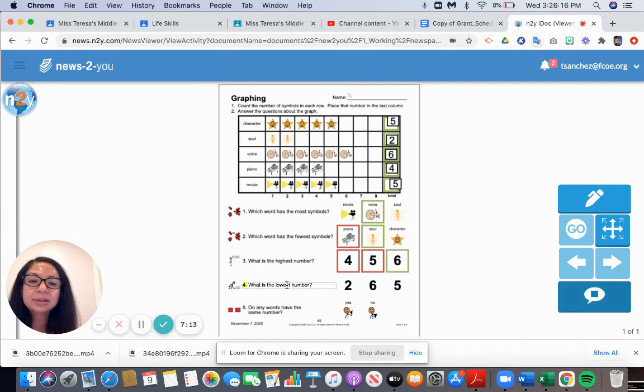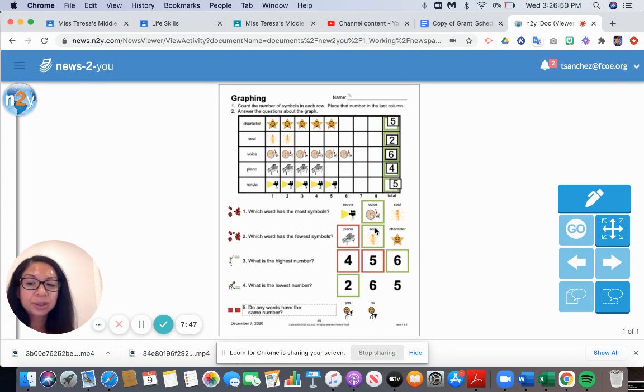Question four: What is the lowest number? Is it two, six, or five? We see soul is the fewest, and that also has the lowest number, which is two. And the last question: Do any words have the same number? This is yes or no. There's five, two, six, four, and five. Well, I do see two fives. So two words have the same number. So I say yes.